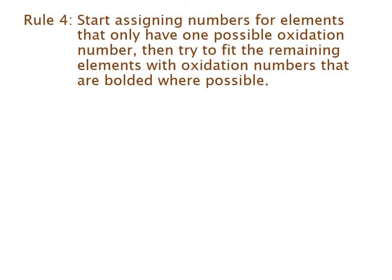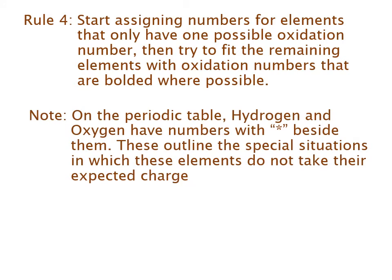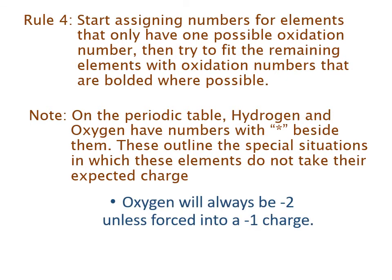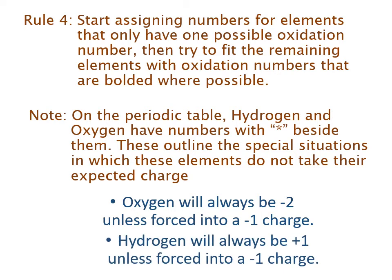Rule four: start assigning numbers for elements that only have one possible oxidation number, then try to fit the remaining elements with oxidation numbers that are bolded where possible. If I was looking at potassium permanganate, I would start with potassium because potassium can only be a plus one. I would not start with manganese or oxygen because they have a number of different charges they can take. Note: on the periodic table, hydrogen and oxygen have numbers with asterisks beside them. These outline the special situations in which these elements do not take their expected charge. Typically, oxygen will always be a minus two, so I always try oxygen with a minus two first — and if that doesn't work, then I try oxygen with a minus one. Same thing with hydrogen: hydrogen will always be tried with a positive one first, and if that doesn't work, then we try it with a minus one charge.